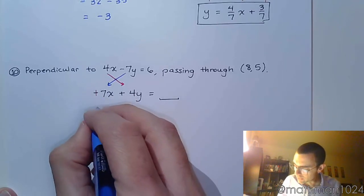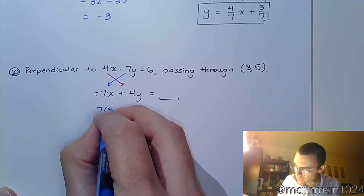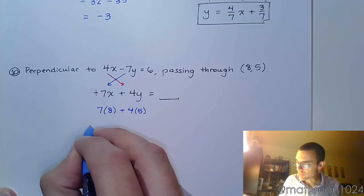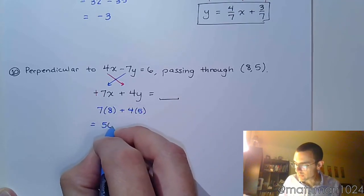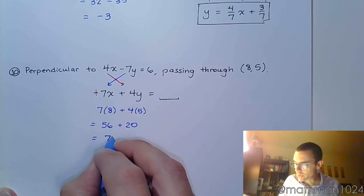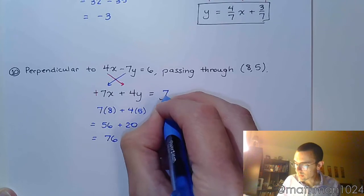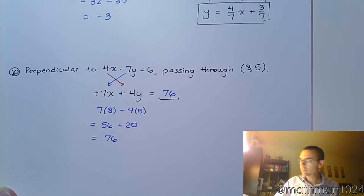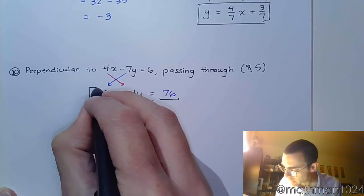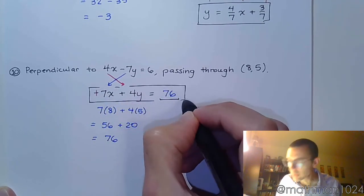Let's use the 8 and 5. So we're going to do 7 times 8 plus 4 times 5. That's 56 plus 20. And very quickly we get 76. And there we go. That's your equation. And you might think that something is up. No, that's exactly what it is.